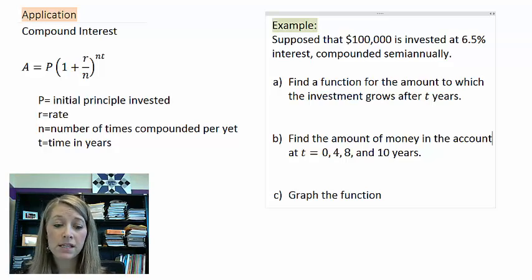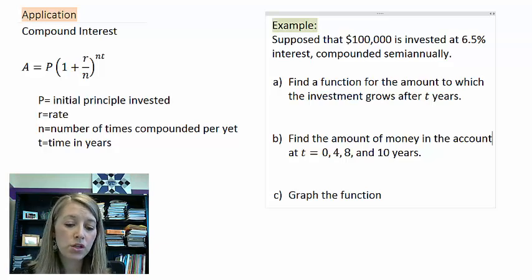So the formula that's given for that is A equals P times 1 plus r over n to the nt. And so what do each of these stand for?